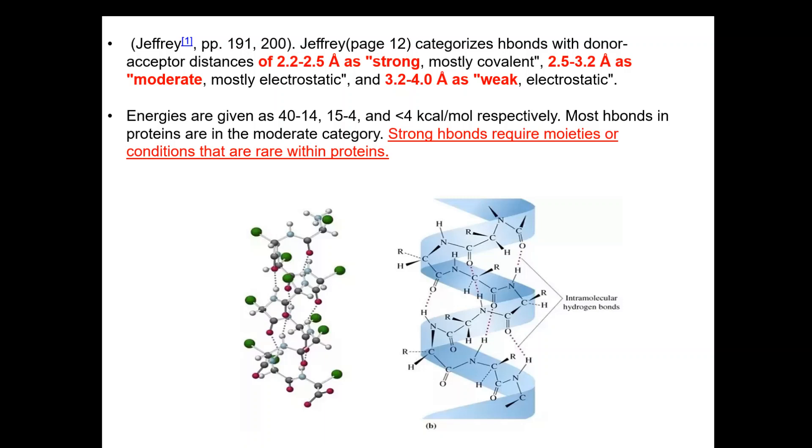In proteins we don't have very strong hydrogen bonds. We have moderate hydrogen bonds because very strong hydrogen bonds need conditions which are very rare in proteins. Here is an alpha helix of a protein and you see many intramolecular hydrogen bonds within it. They play a very important role in stability.